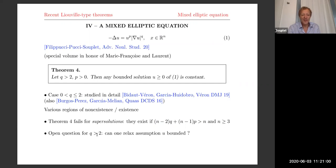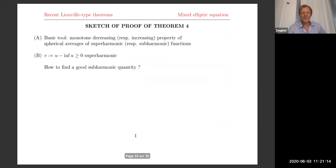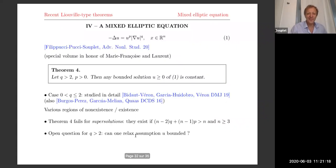The open question for Q > 2 is: can one relax the assumption that U is bounded? We don't know how to do it — it seems a difficult problem. Let me give some sketch of the proof of Theorem 4.